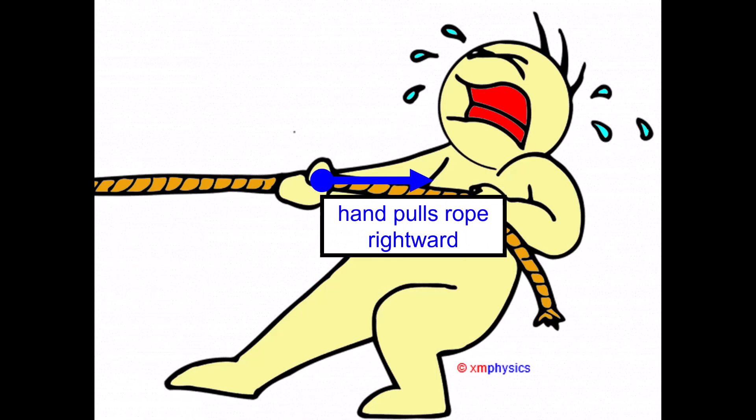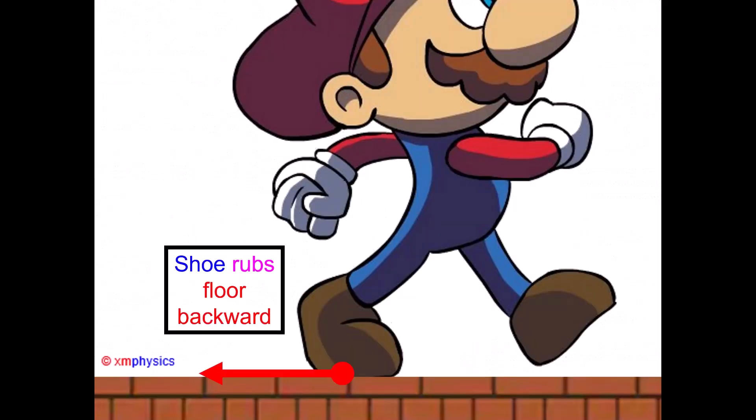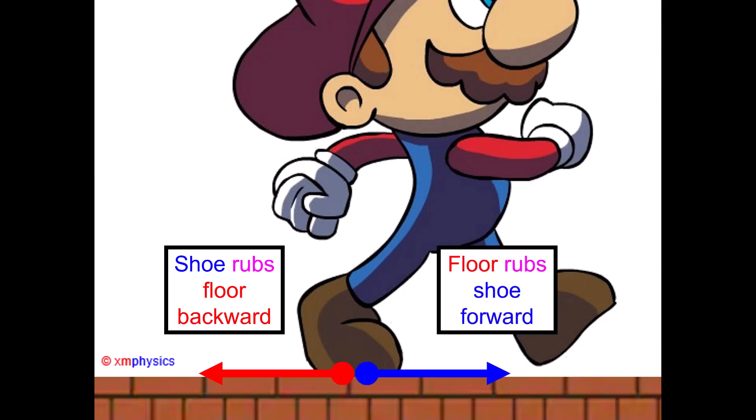The hand is pulling the rope rightward, which means the rope must be pulling the hand leftward. In fact, you can't pull the rope without the rope pulling you. The shoe is rubbing the floor backward, which means the floor is rubbing the shoe forward — this is how we walk ourselves forward.